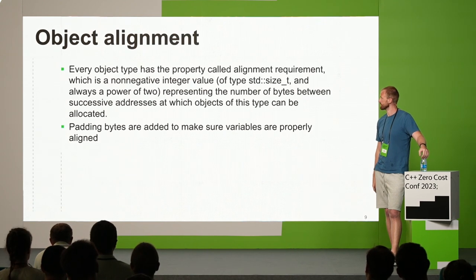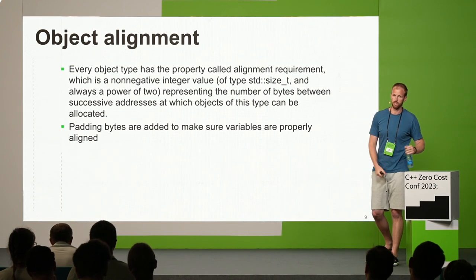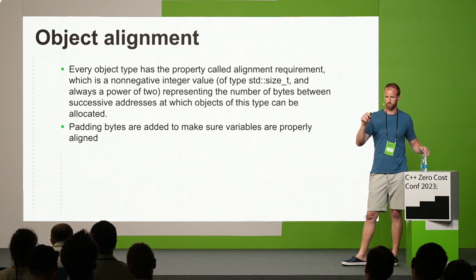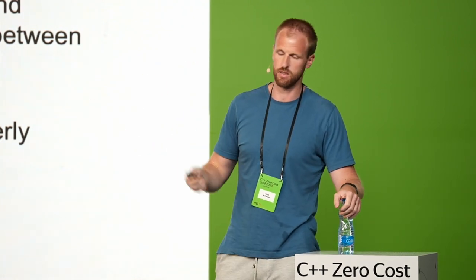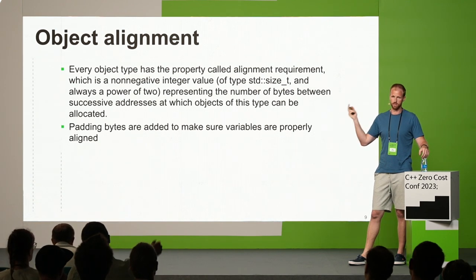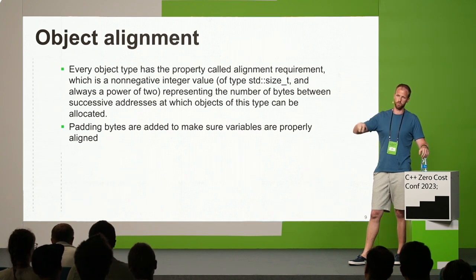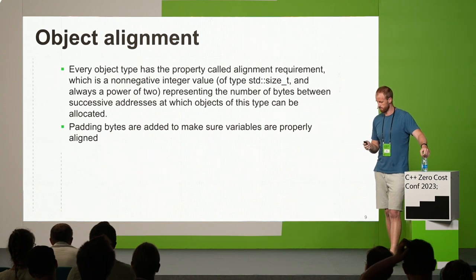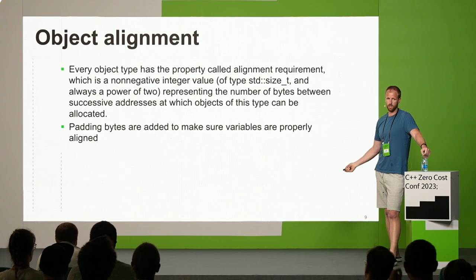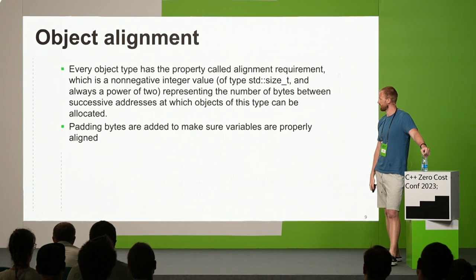Every type has an alignment requirement: the address of the object needs to be divisible by that requirement. It's always a power of two. If the next available address does not satisfy the requirement, you get some padding bytes and move to the next address that does satisfy it.